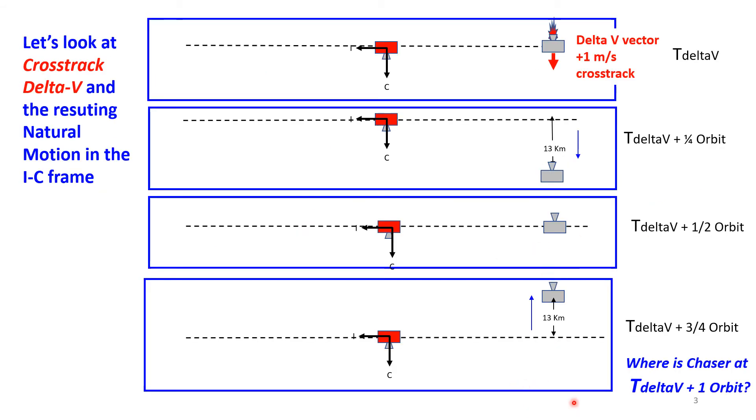Cross-track is decoupled from the in-track radial motion, which makes this really easy. We have the target and the i vector of the in-track direction, and then the cross-track which is this direction positive—the right-hand rule. We're going to position the chaser behind the target and do a positive cross-track burn. The thruster is pointed off to the right, creating this one meter per second delta-v vector. We fire the thruster.